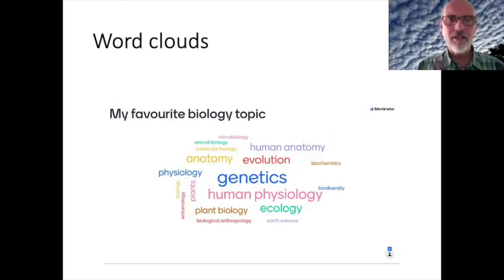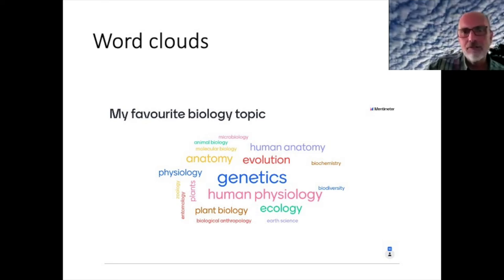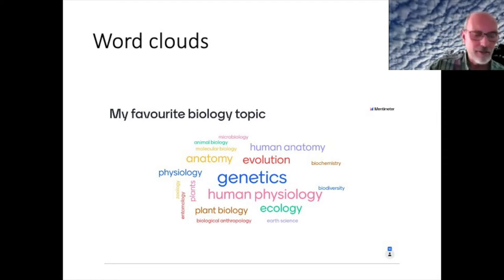You can also use Mentimeter to generate word clouds. In this case, from my first session with a new group of students, I asked them to type in their three favorite biology topics, and it generated a word cloud. This is actually very useful for me because it shows that there's great enthusiasm for genetics and human physiology, but maybe only one person who's keen on entomology. So it helps me start building a picture of the interest of the class, and also identify topics where they need a little more help to see the potential and become more enthusiastic.